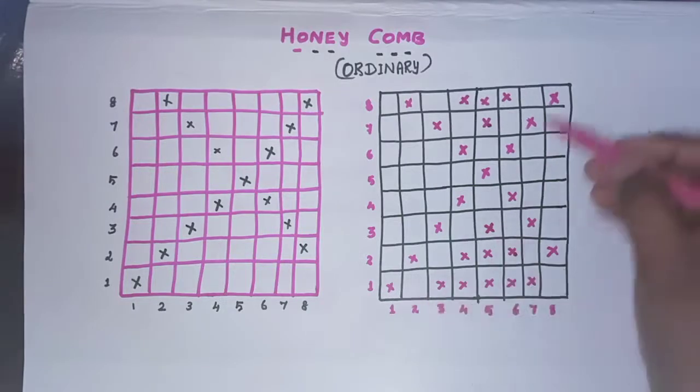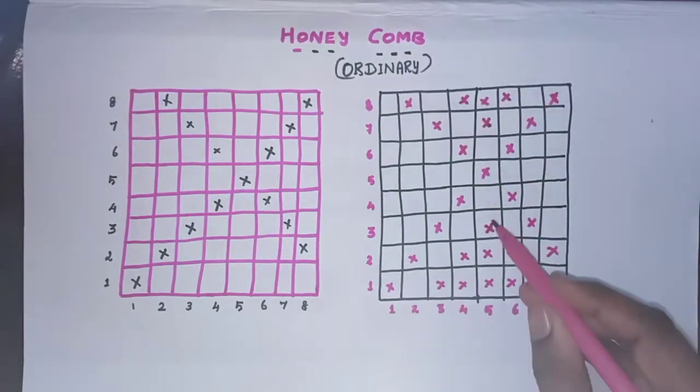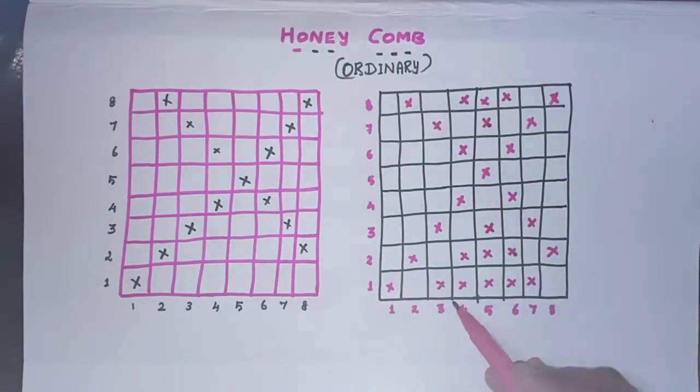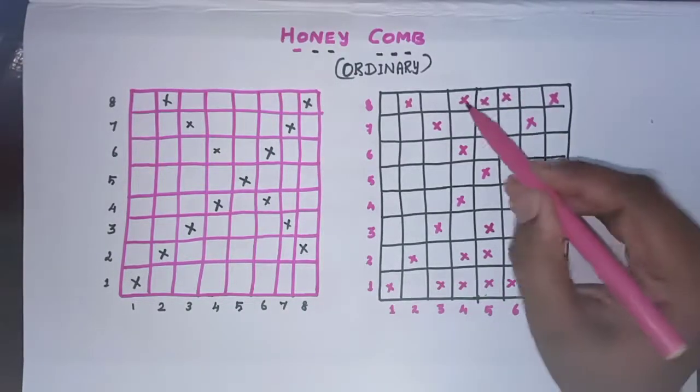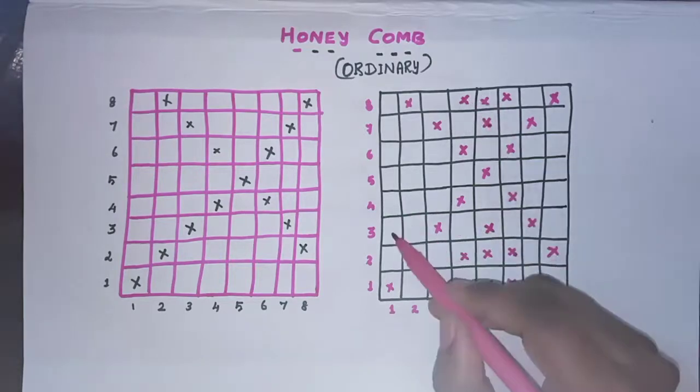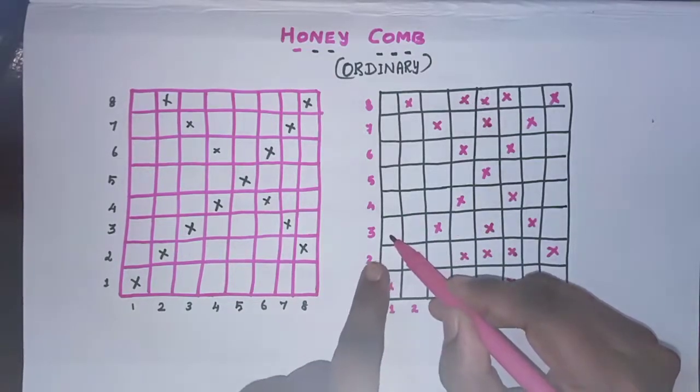So first you have to draw these diagonal lines, and then you have to complete this box at the bottom, then you have to complete the boxes at top, then you have to come to the left side.